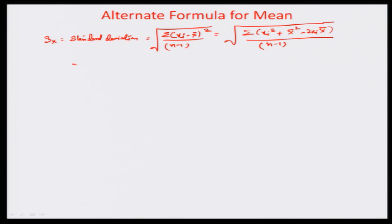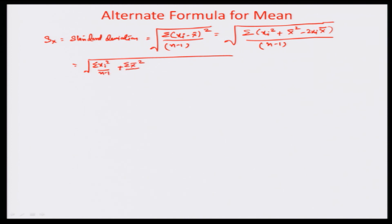You can further simplify this by looking at it as sigma x_i squared by n minus 1, plus x-bar squared times sigma over n minus 1. The sigma, as mentioned earlier, is for samples from i equals 1 to n, so it is exactly n samples.